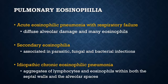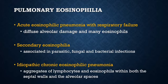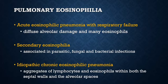Pulmonary eosinophilia is characterized by an infiltration of eosinophils, which are recruited by elevated alveolar levels of eosinophilic attractants such as interleukin-5. Acute eosinophilic pneumonia with respiratory failure is an acute illness of unknown cause with rapid onset of fever, dyspnea, and hypoxemic respiratory failure; histology shows alveolar damage and many eosinophils. Secondary pulmonary eosinophilia can be due to parasitic, fungal, and bacterial infections. Idiopathic chronic eosinophilic pneumonia is characterized by aggregates of lymphocytes and eosinophils within the septal walls and alveolar spaces.